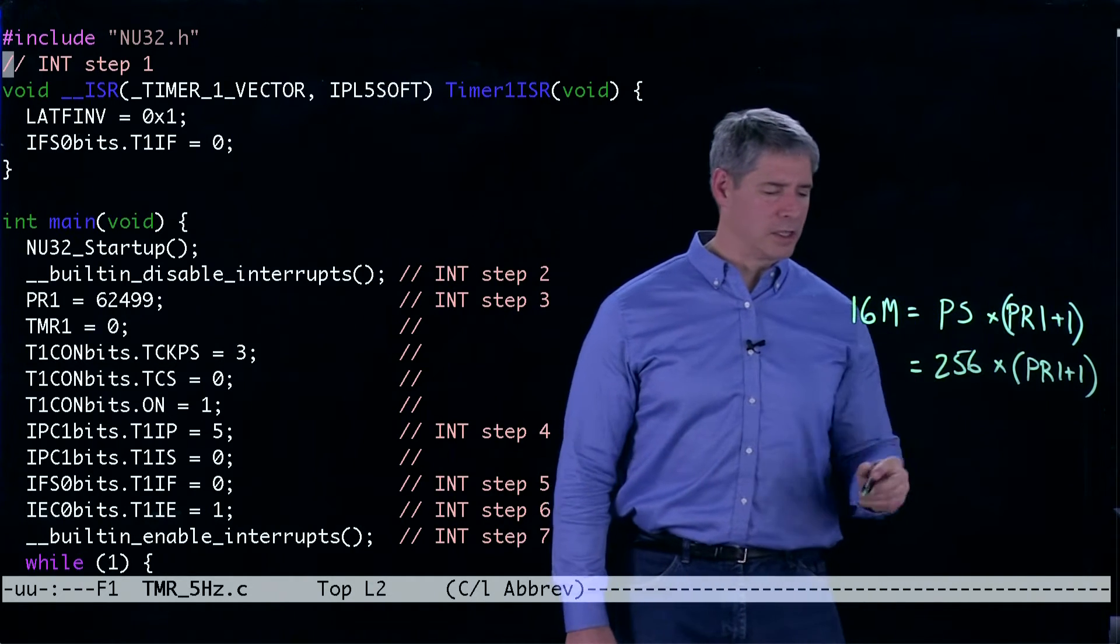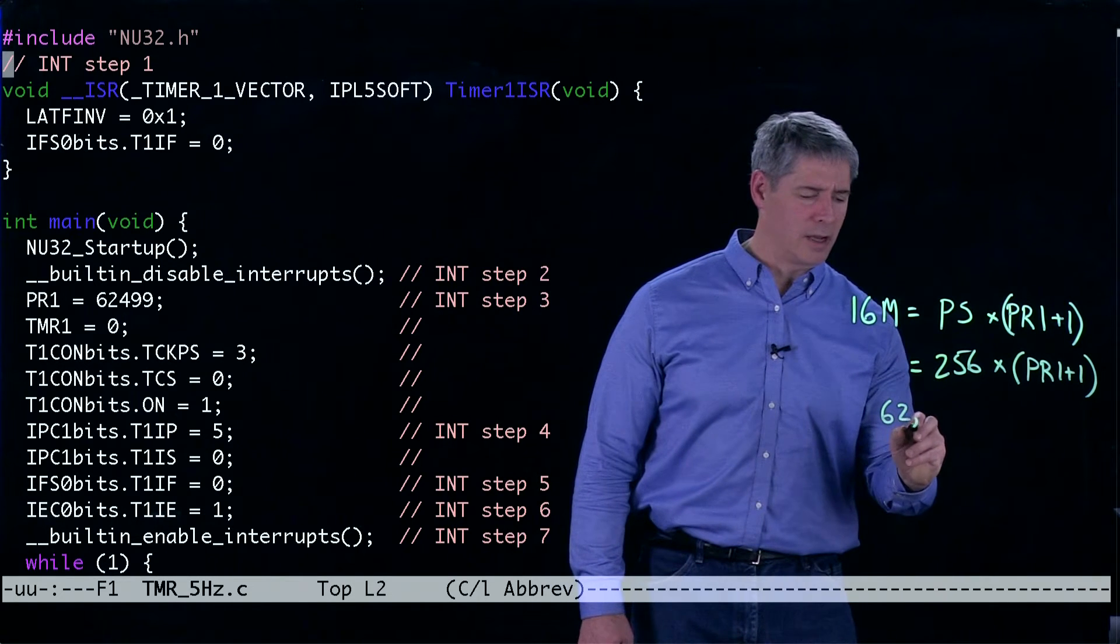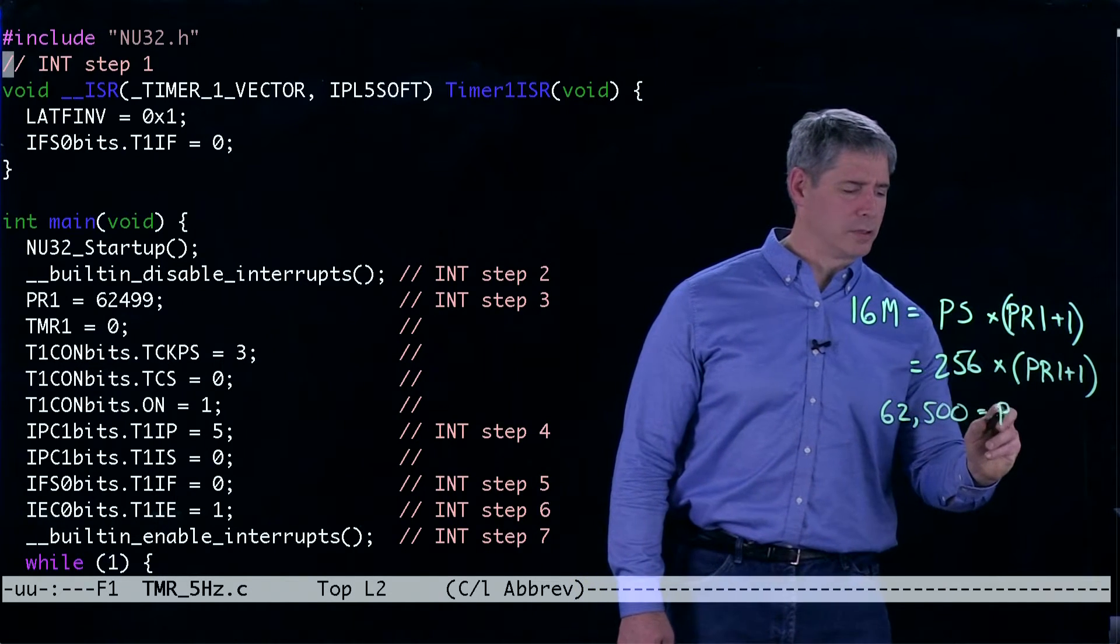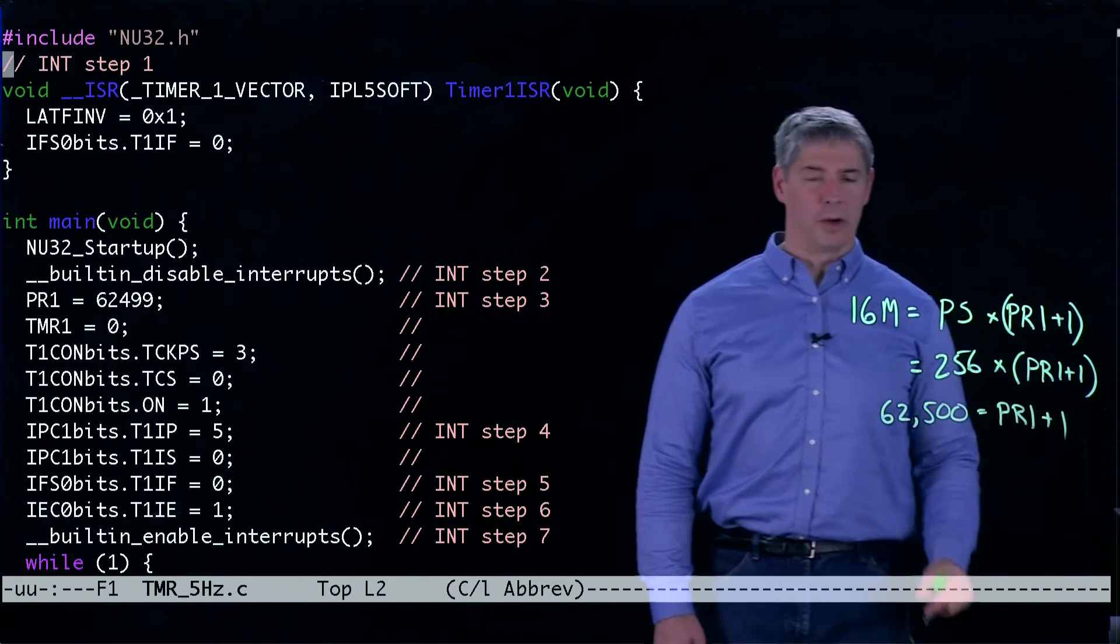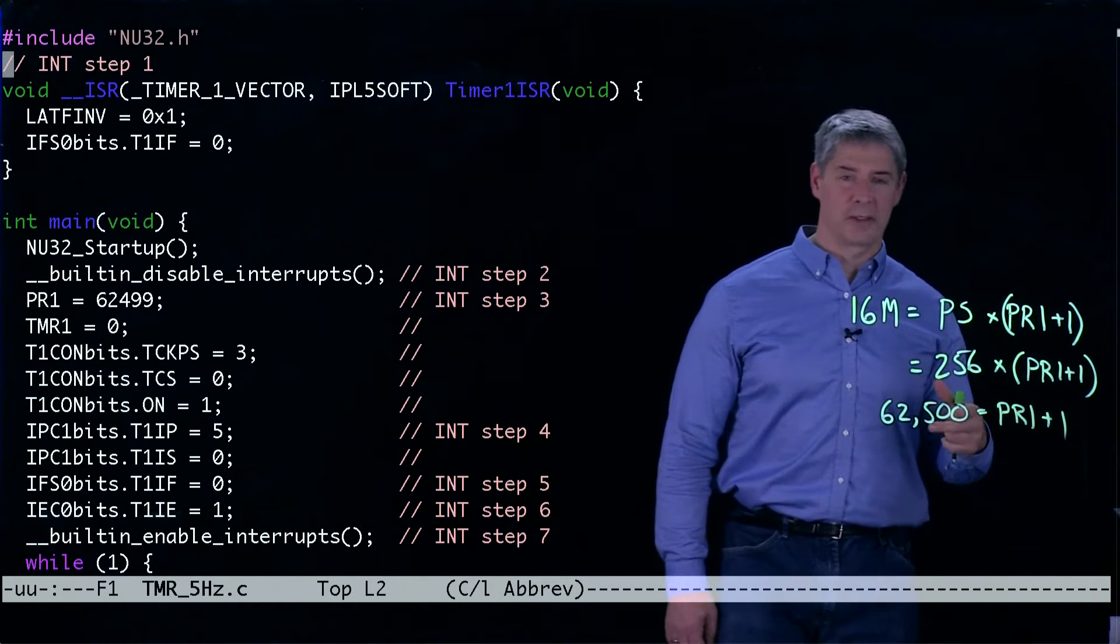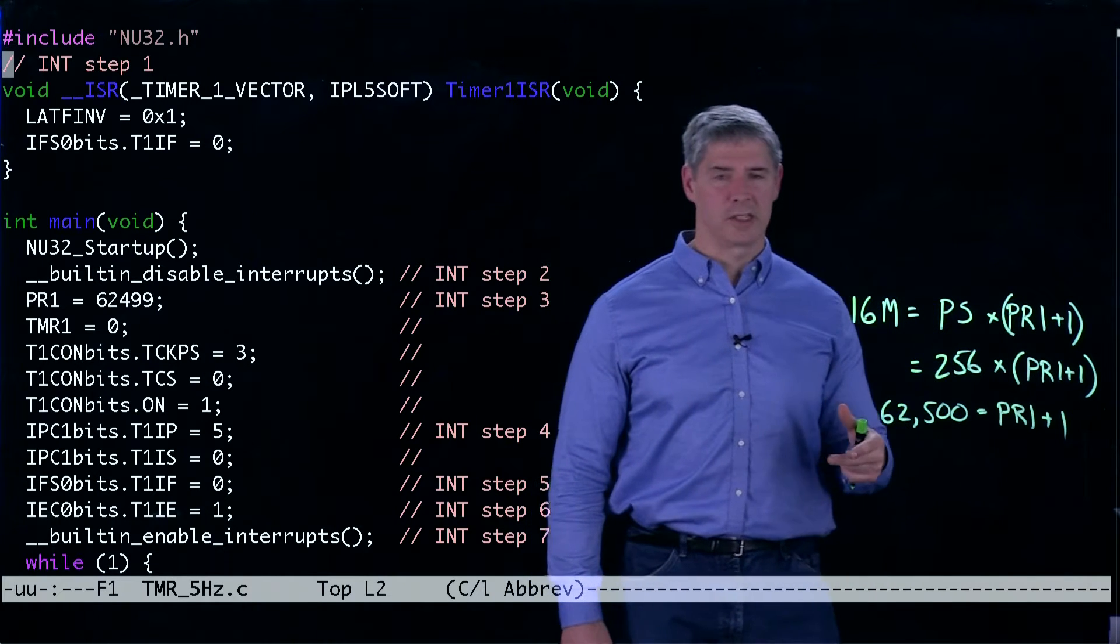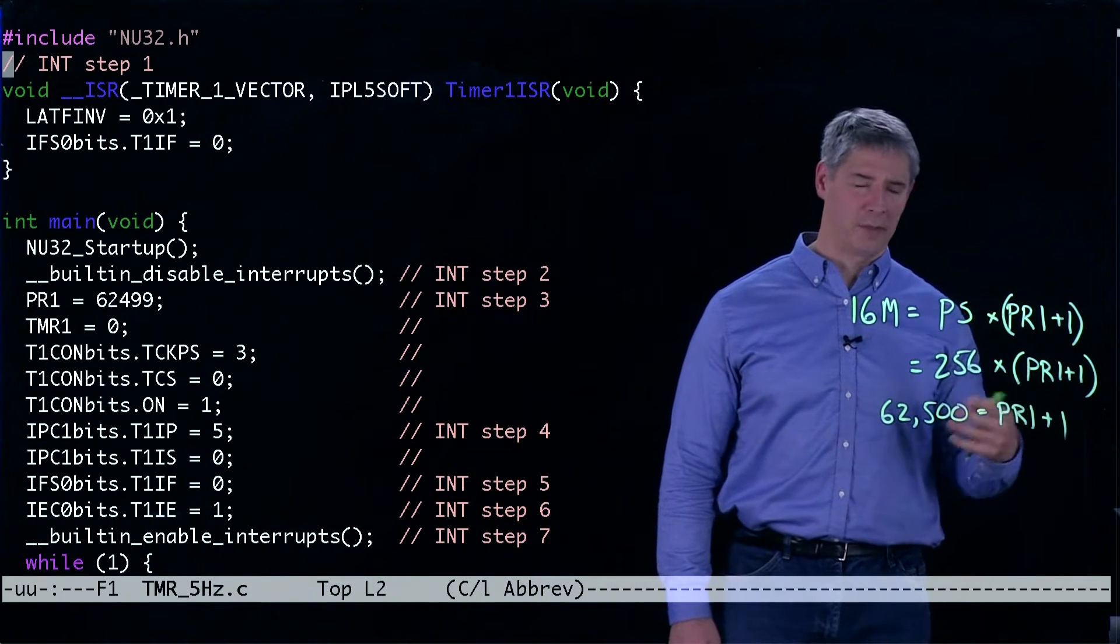We do this division and we find that 62,500 is equal to the period register plus 1. So we can only count up to about 65,000 with the 16-bit timer, timer1 in this case.